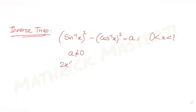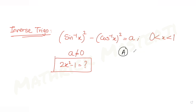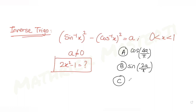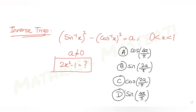We need to find the value of the expression 2x² minus 1. The answer choices are: first, cos(4a/π); second, sin(2a/π); third, cos(2a/π); and the last option, sin(4a/π). We need to figure out which one is correct.